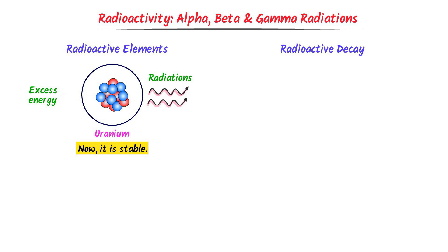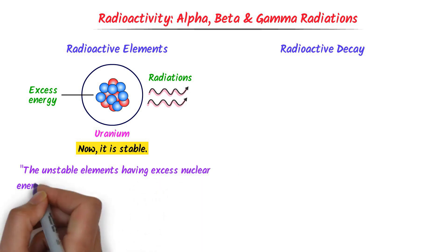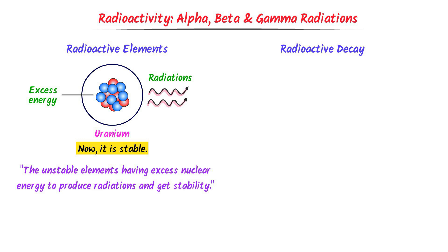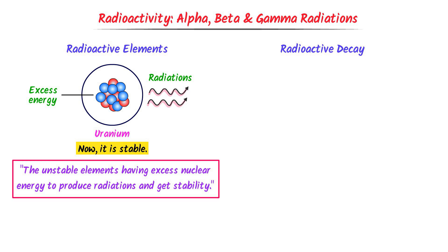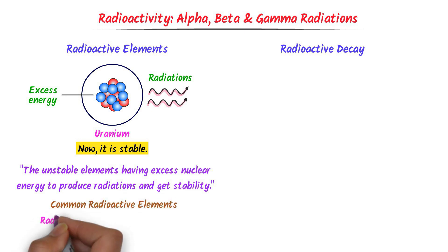Radioactive elements are defined as the unstable elements having excess nuclear energy that produce radiations and get stability. Some other common radioactive elements are polonium, radium and thorium.